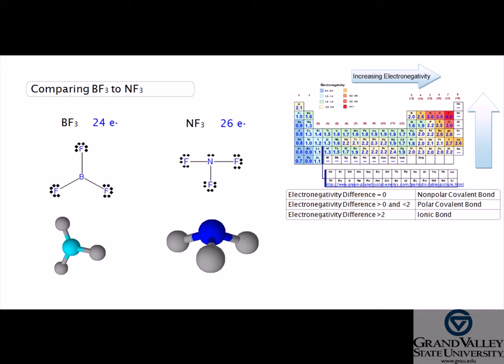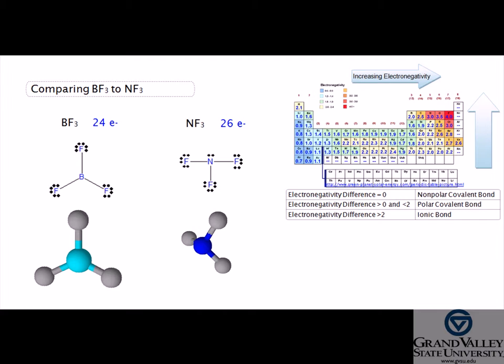Notice that the bonds in the trigonal planar molecule BF₃ reside on the same plane. Differently, in the tetrahedral molecule NF₃, the bonds are located on different planes.